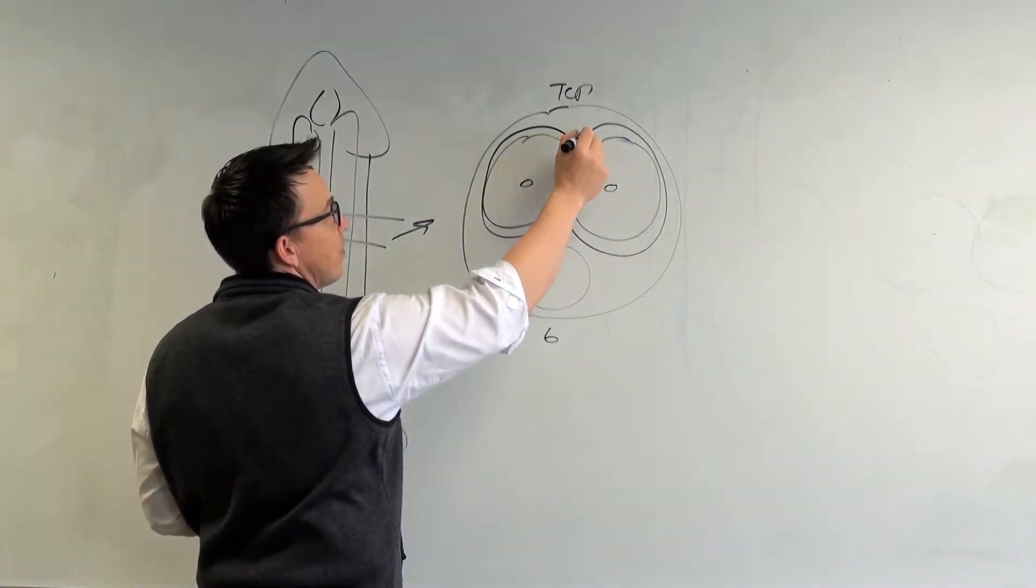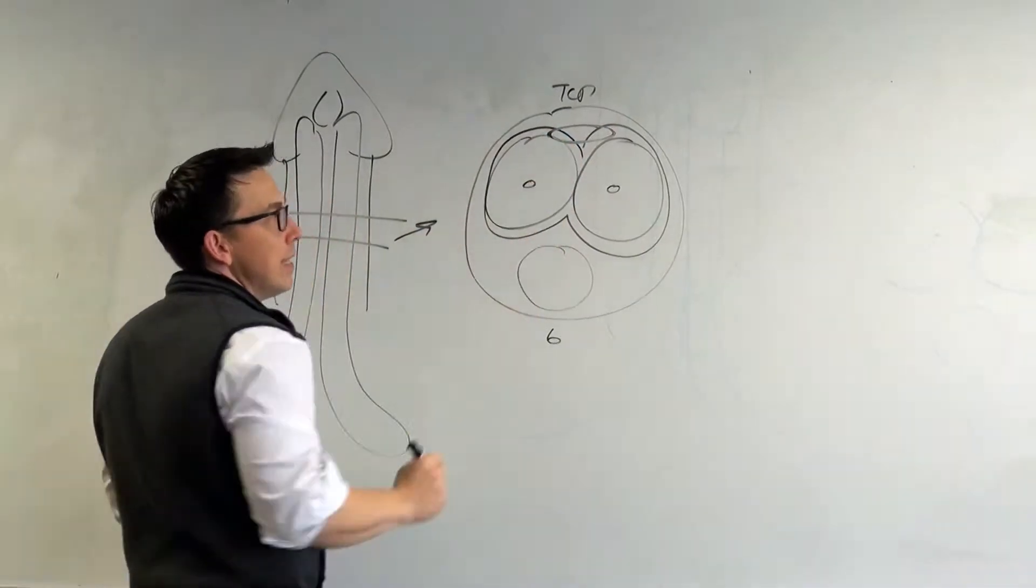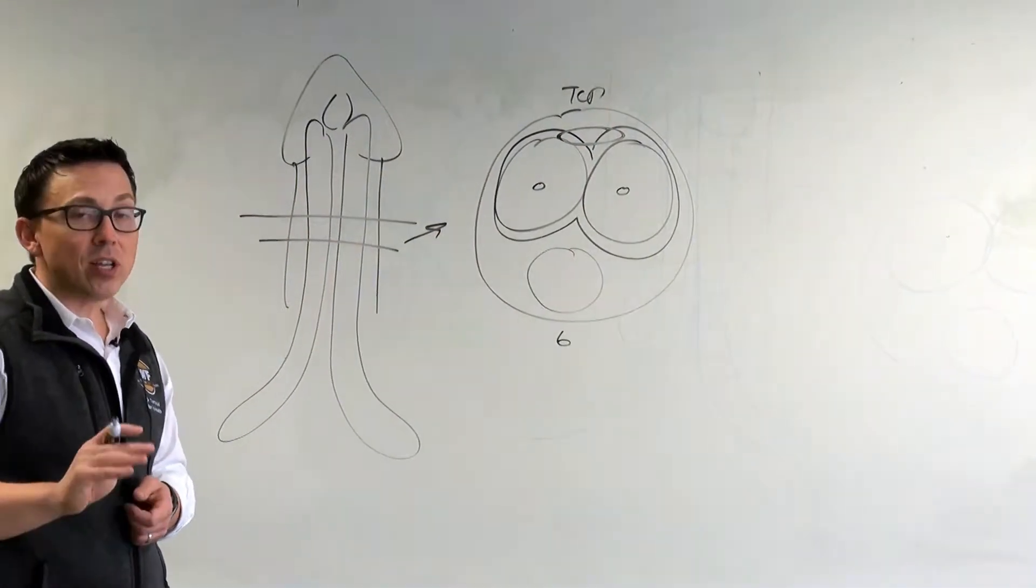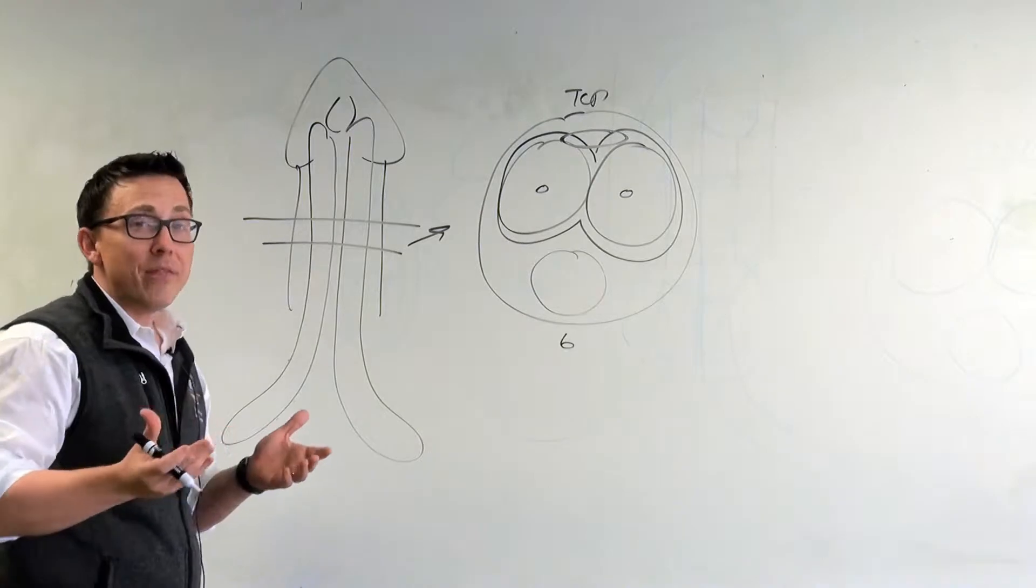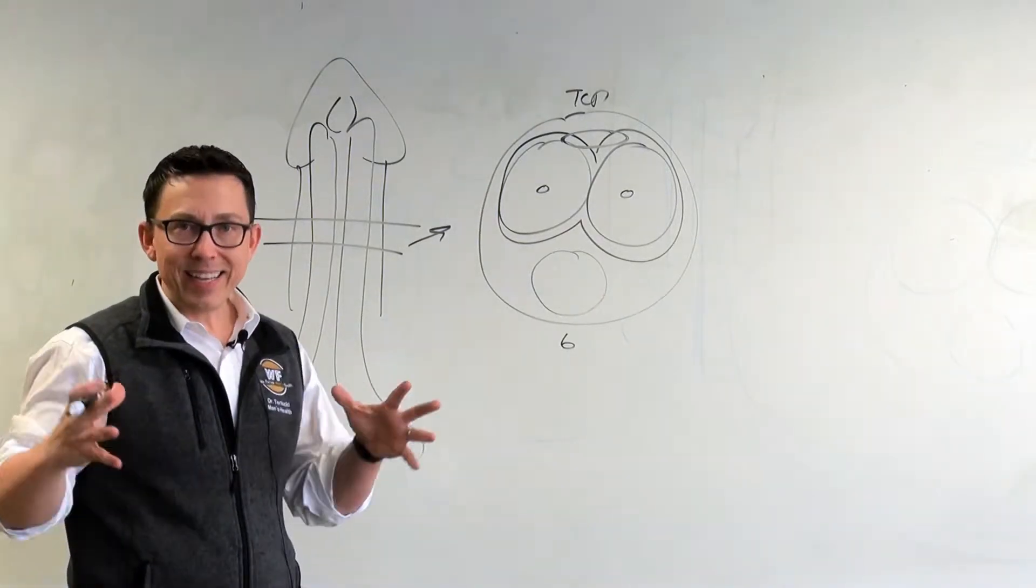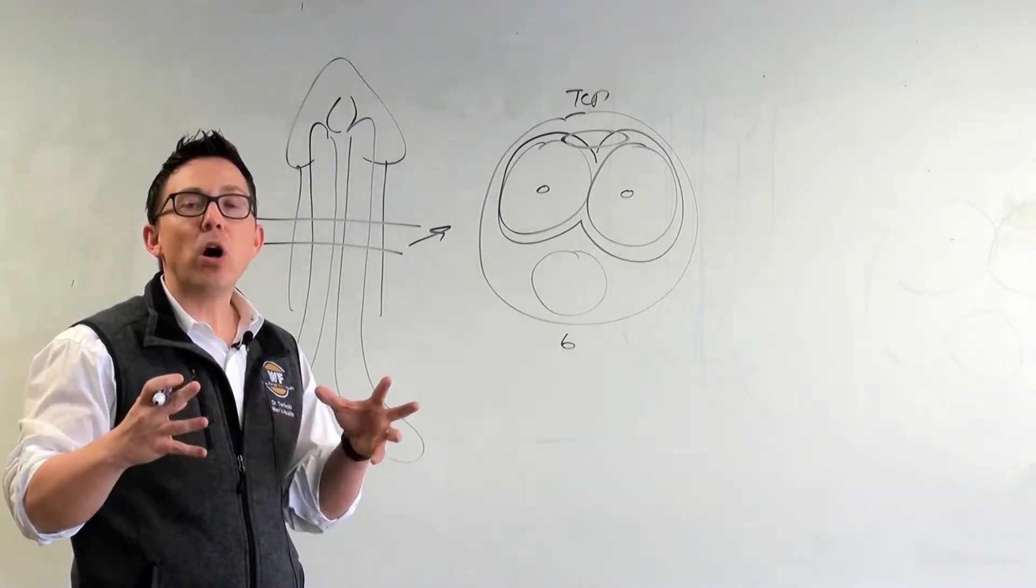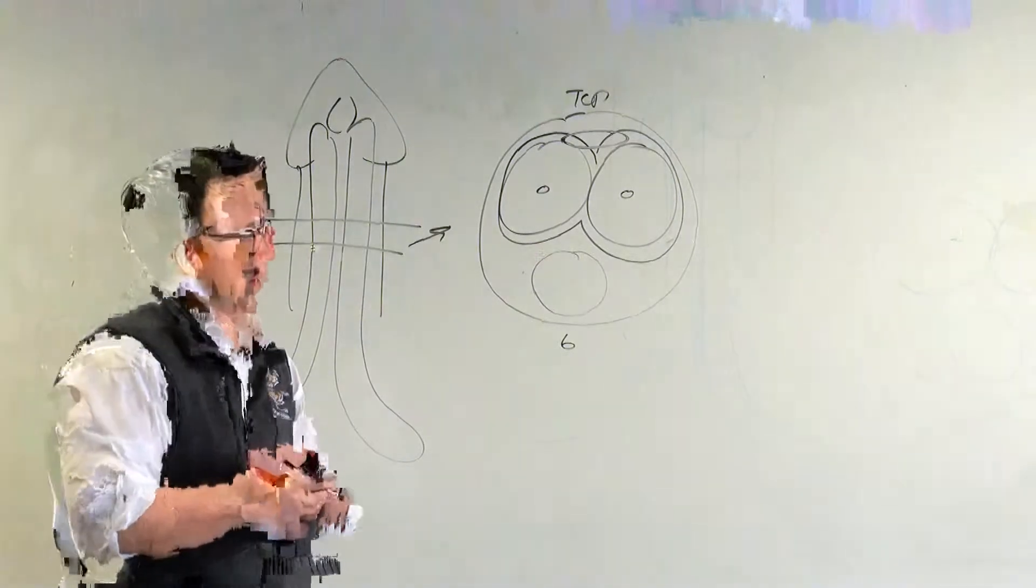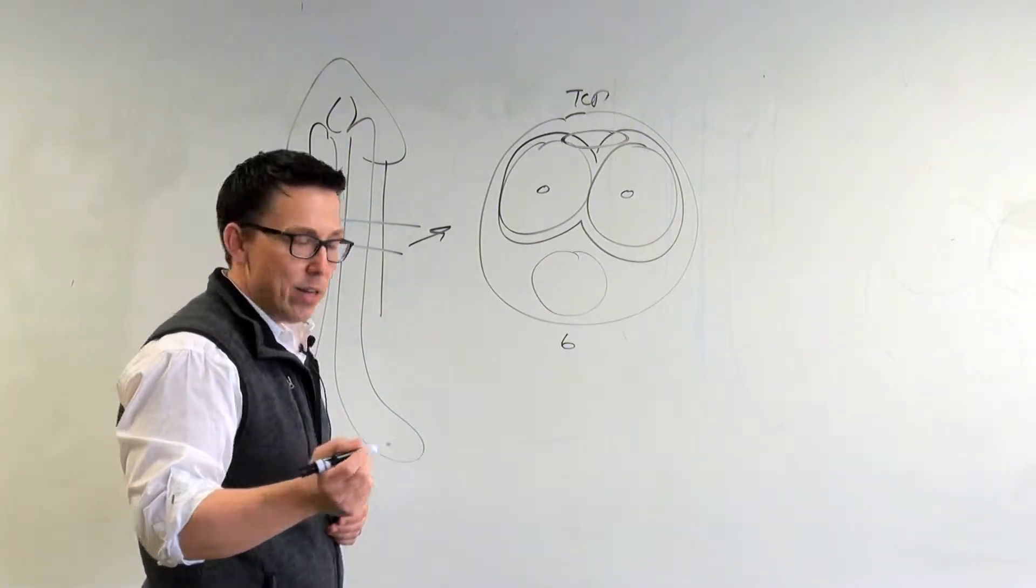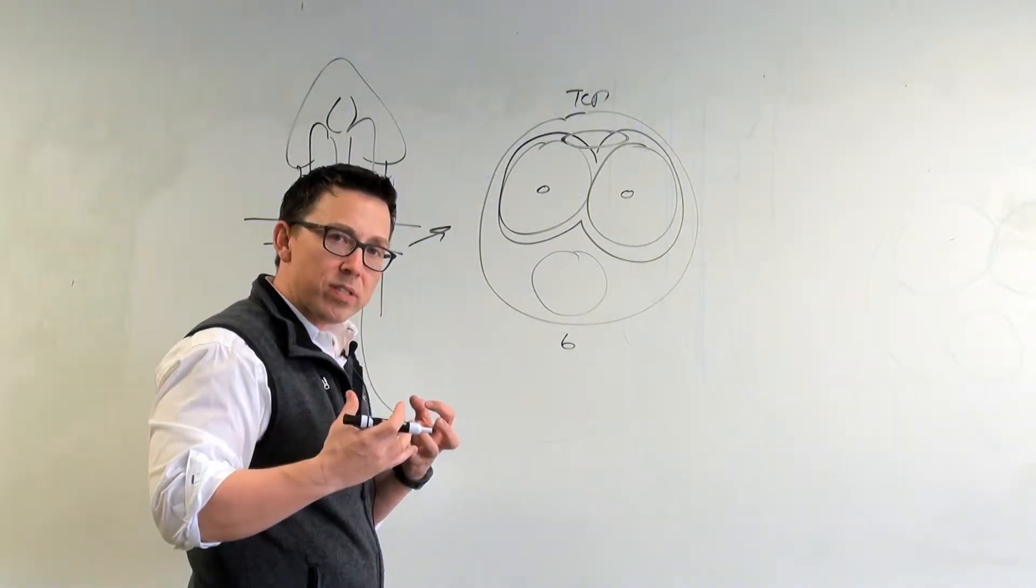Now, some men will develop scar tissue involving these chambers. And we'll talk a little bit about why we think it gets there. However, as with any scar, it can contract and pull in the direction of the scar. And so the most common scenario is that it pulls up towards the body.